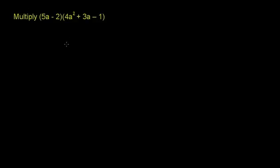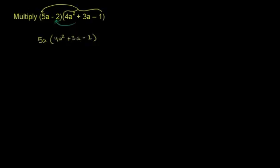Here we really have to rely on the distributive property. We can distribute this entire trinomial onto the binomial. So we multiply 4a squared plus 3a minus 1 times 5a, and then multiply 4a squared plus 3a minus 1 times negative 2. I've just distributed this onto each term. You see the 5a minus 2 — each term is now being multiplied by this entire thing.